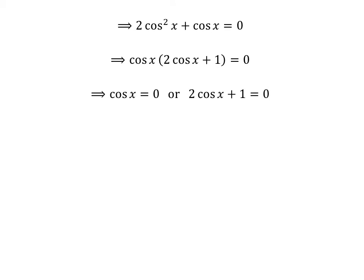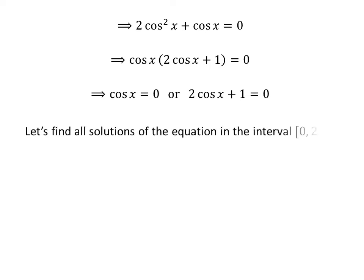The above expression gives us cosine of x is equal to 0, or 2 times cosine of x plus 1 is equal to 0. Let us first find the solutions to the equation cosine of x is equal to 0 in the interval 0 to 2π.